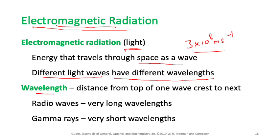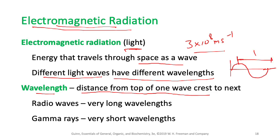Wavelength is the distance from the top of one wave crest to the next. If you picture a wave, the wavelength — symbolized by lambda (λ) — is the distance between two successive crests. We'll now look at the electromagnetic spectrum to see the different types of electromagnetic radiation.